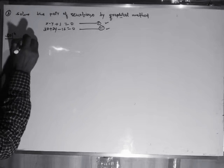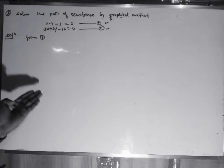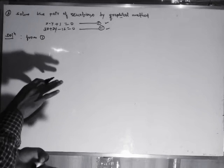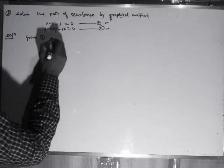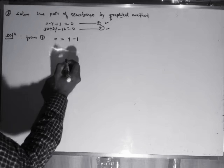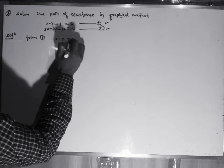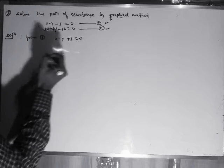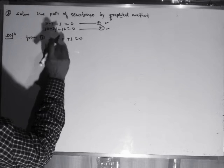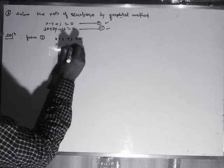From the first equation, either you express one variable in terms of the other variable, or the second variable in terms of the first variable. So here, from the first equation we can write x is equal to y minus 1. If you understand, x minus y plus 1 is equal to 0 — this is the first equation. And x equals y minus 1 if you move minus y and plus 1 to the right hand side.